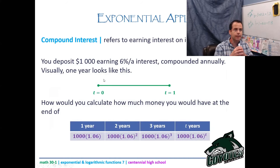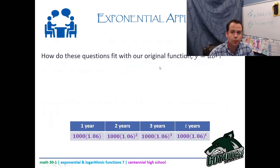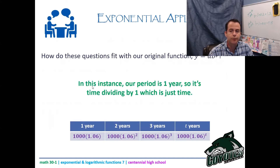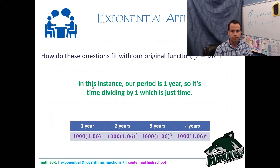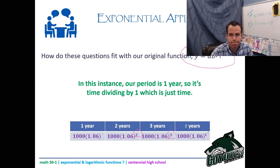Notice these don't have a fractional exponent. That's because compounding annually means the period is 1 year, so t ÷ 1 is just t. This still fits our formula y = a · b^(t/p) — p just equals 1 here, which is why the fraction disappears.